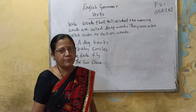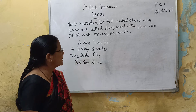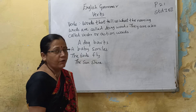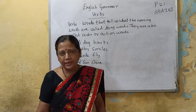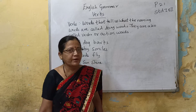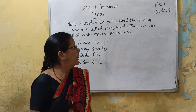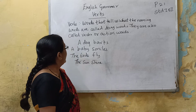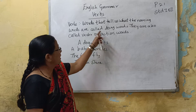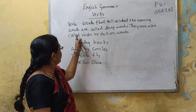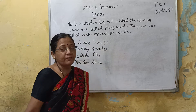What is verb? Verb is action word. Whatever action which we do, we will say verb. Verb — words that tell us the action are called doing words.